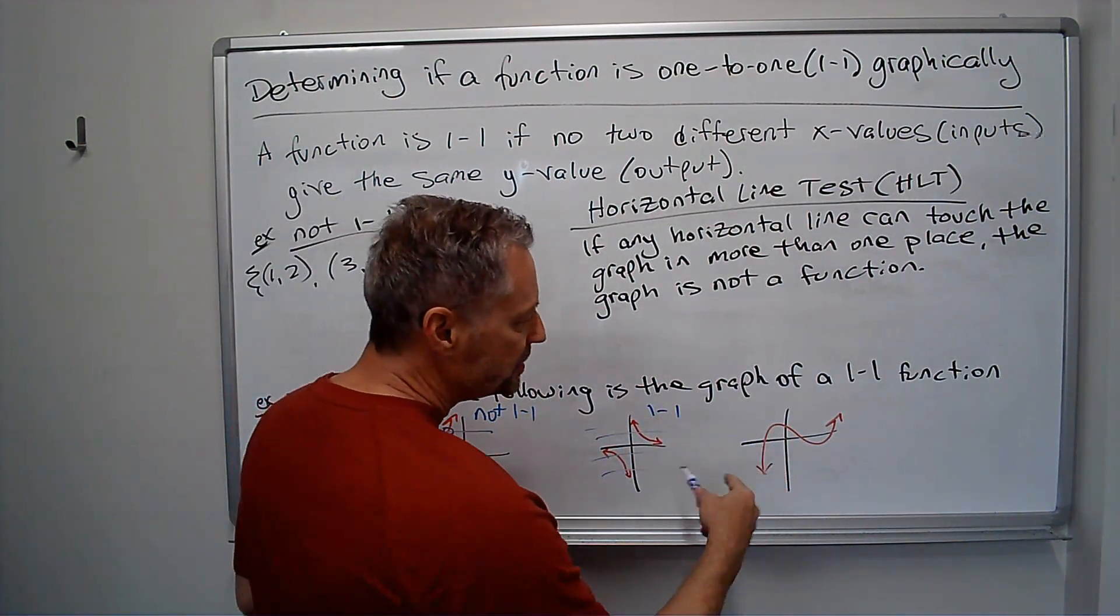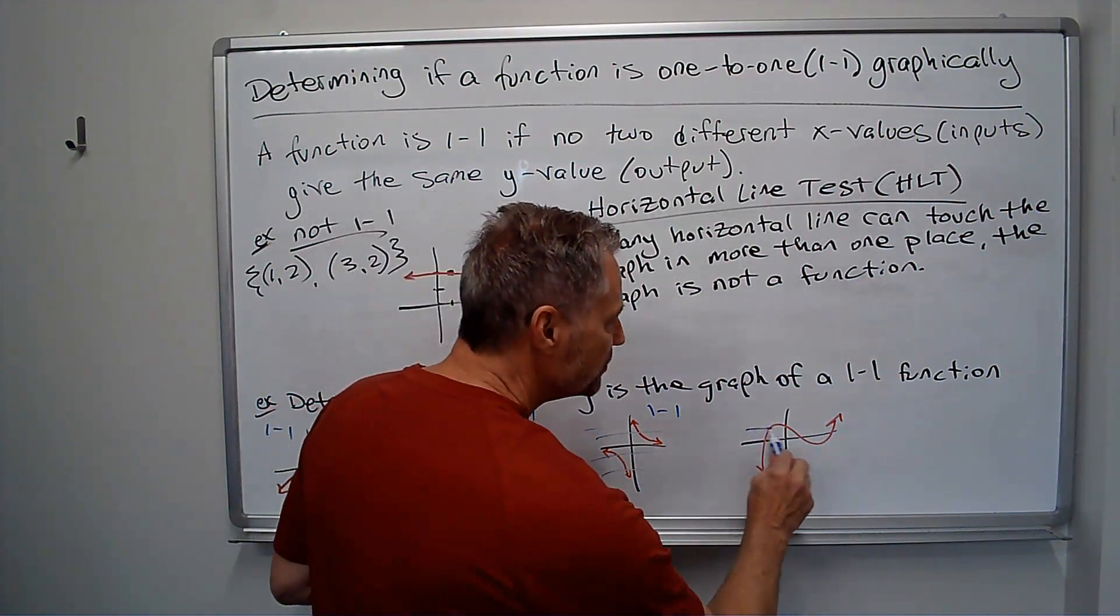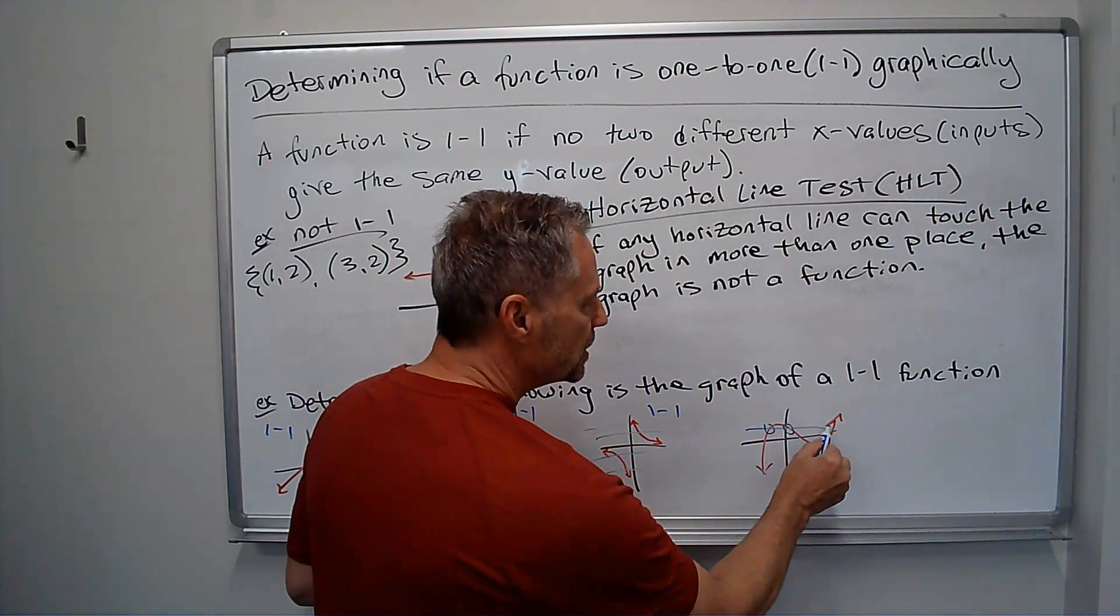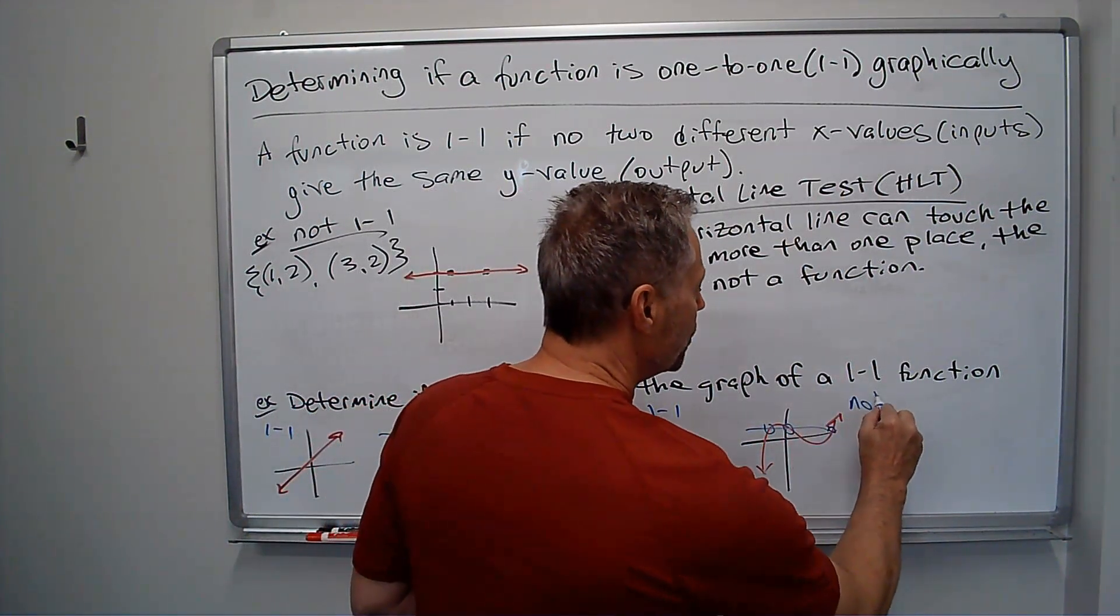But this one, we see even the x-axis crosses more than once. But I can find another line right there that crosses more than once. I actually cross three times. So this one's not one-to-one.